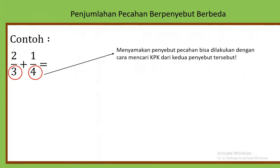Caranya, menyamakan penyebut pecahan bisa dilakukan dengan cara mencari KPK dari kedua penyebut tersebut. Waktu kelas 4, anak-anak sudah mempelajari tentang materi KPK. Cara yang paling mendasar untuk mencari KPK yaitu dengan cara kelipatan. Cari satu per satu kelipatan 3.